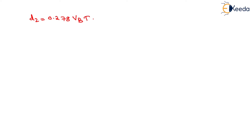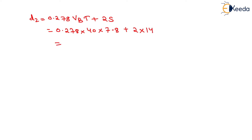D2 will be equal to 0.278 × VB × T + 2 × S. We will put the value of VB which is 40 km per hour, the value of capital T which we had already computed as 7.8 seconds, and the value of S as 14 meters. On solving this, we will get the value of D2 as 114.736 meters.